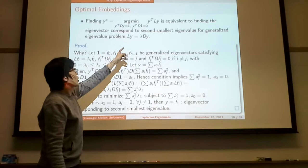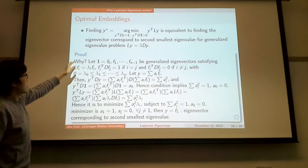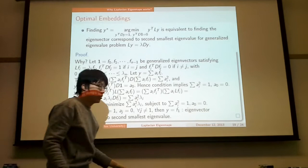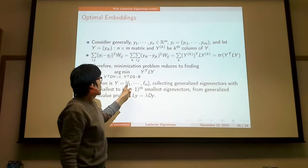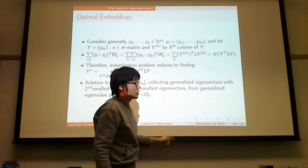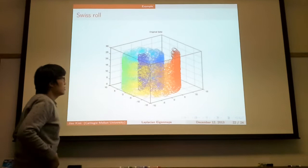Finding the solution is equivalent to finding the eigenvector corresponding to the second smallest eigenvalue for the generalized eigenvalue problem. And there is a proof. In the general case, you can also show it similarly. And the solution is just to get the second smallest to m plus 1 smallest eigenvectors.